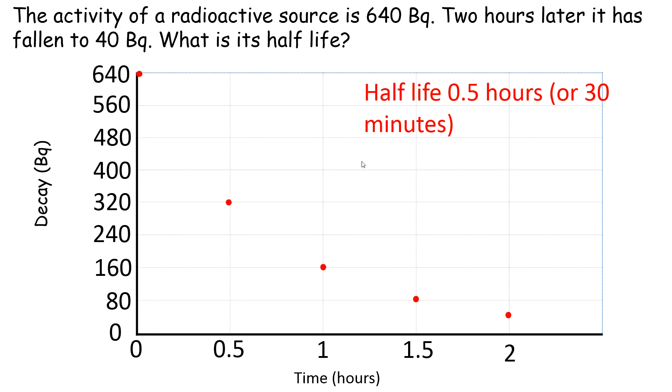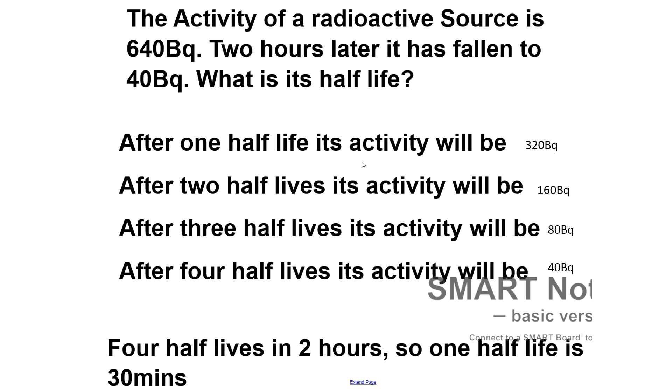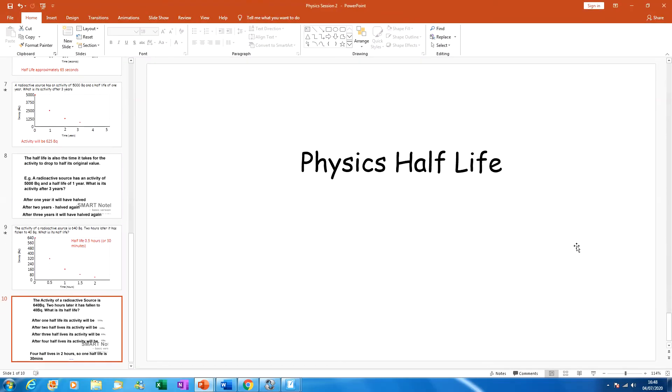Two divided by four is 0.5. So we can do that actually without a graph. Sometimes you won't be given a graph, so it's the same question again but we've just done it using numbers. After one half-life the activity will be 320 becquerels. After two half-lives it will be 160 becquerels. After three half-lives it halves again to 80 becquerels, and after four half-lives it's 40 becquerels. So you've got four half-lives have taken two hours to expire, so two divided by four gives you a half-life of 30 minutes.